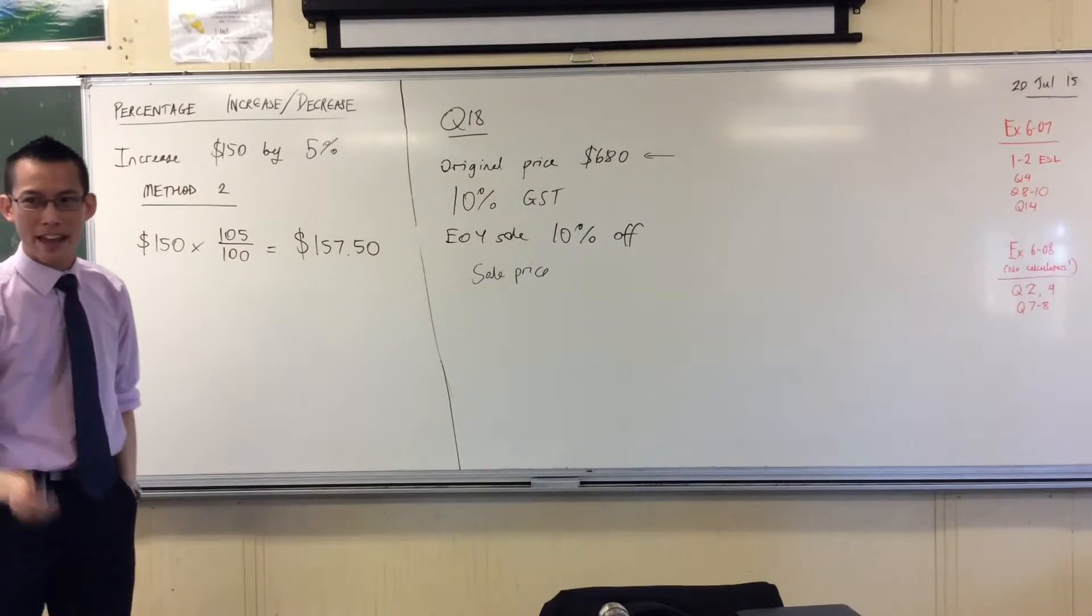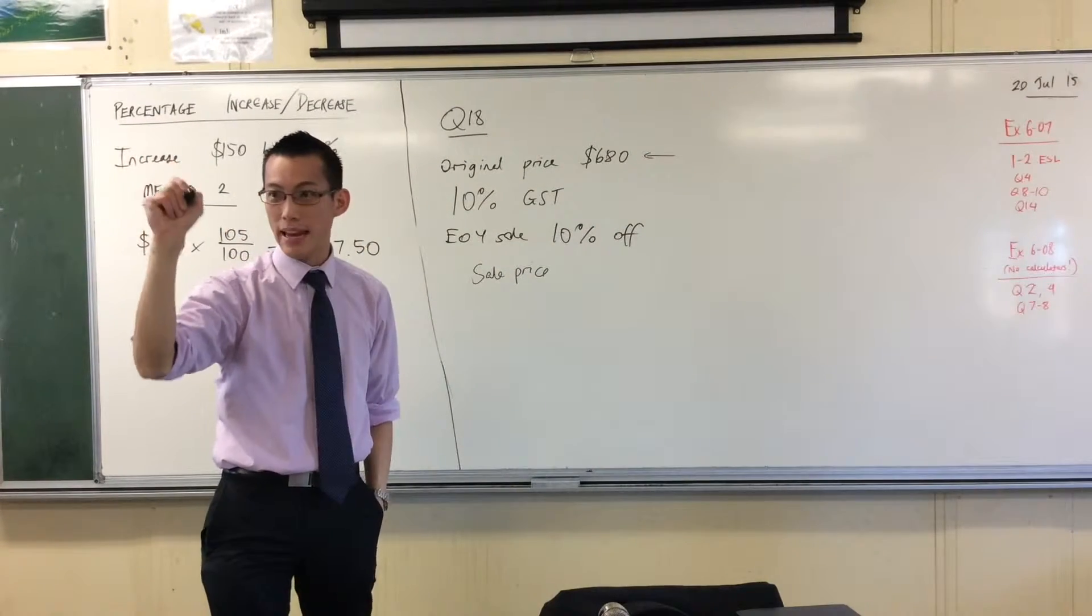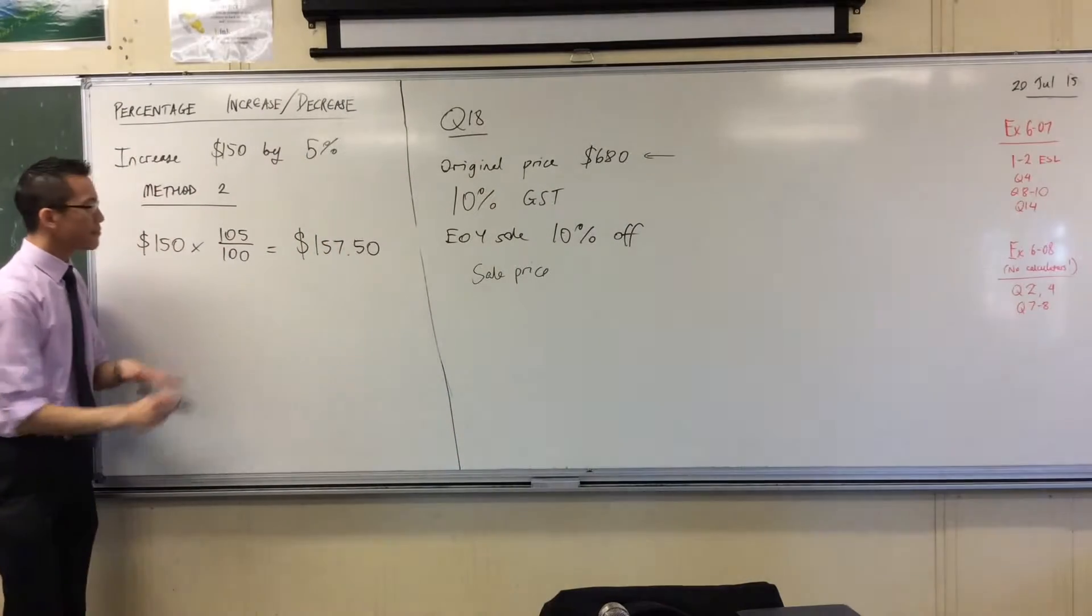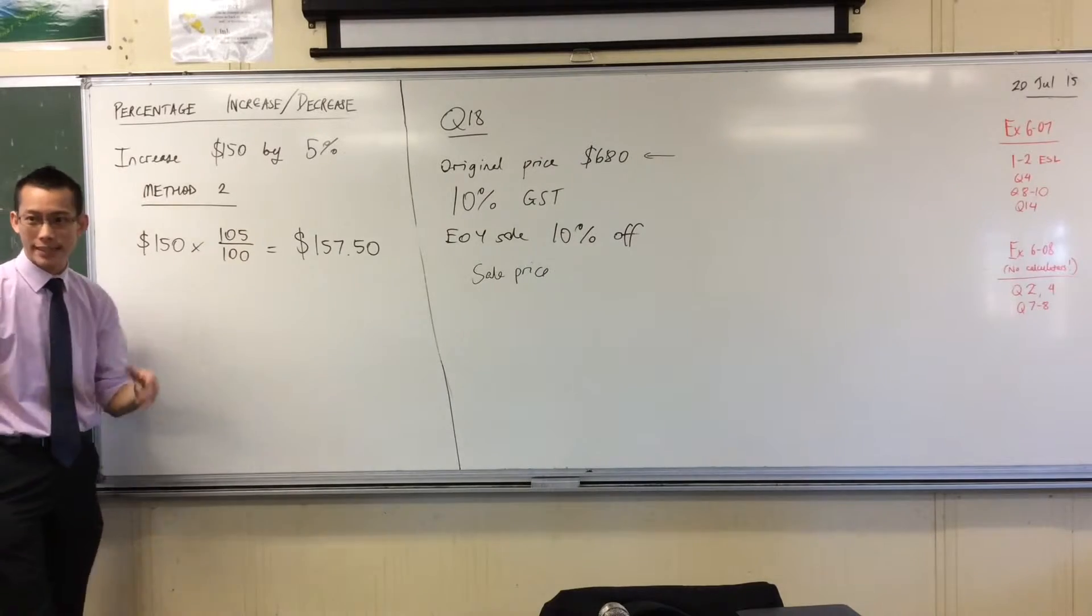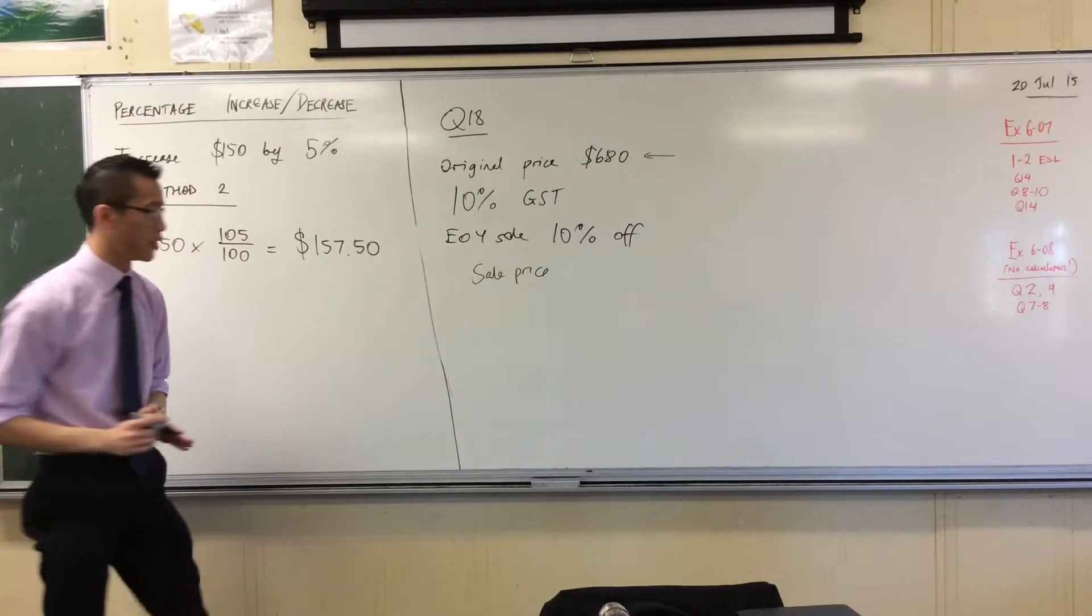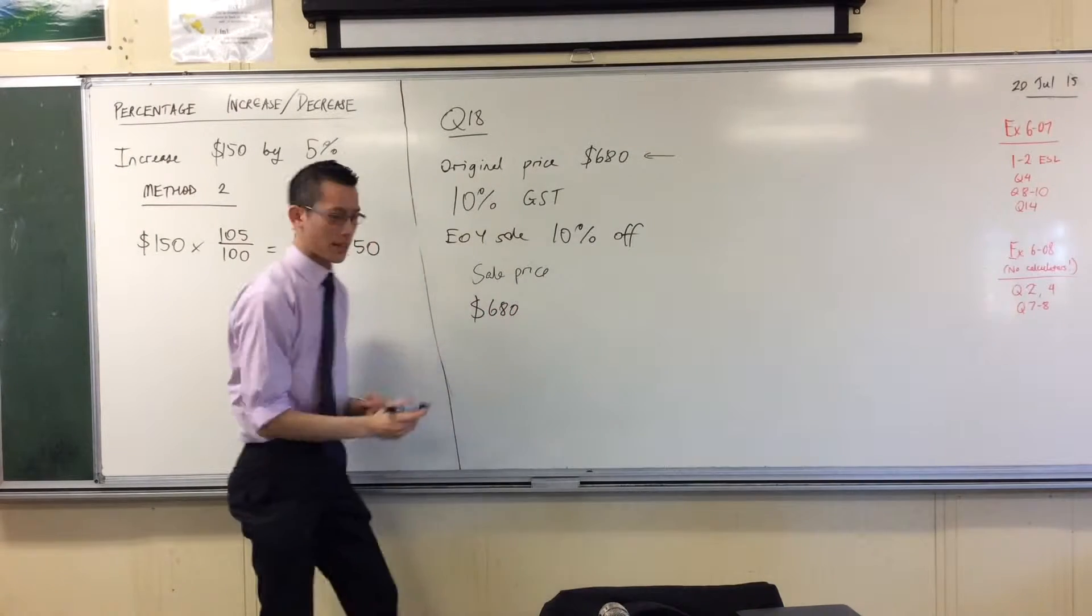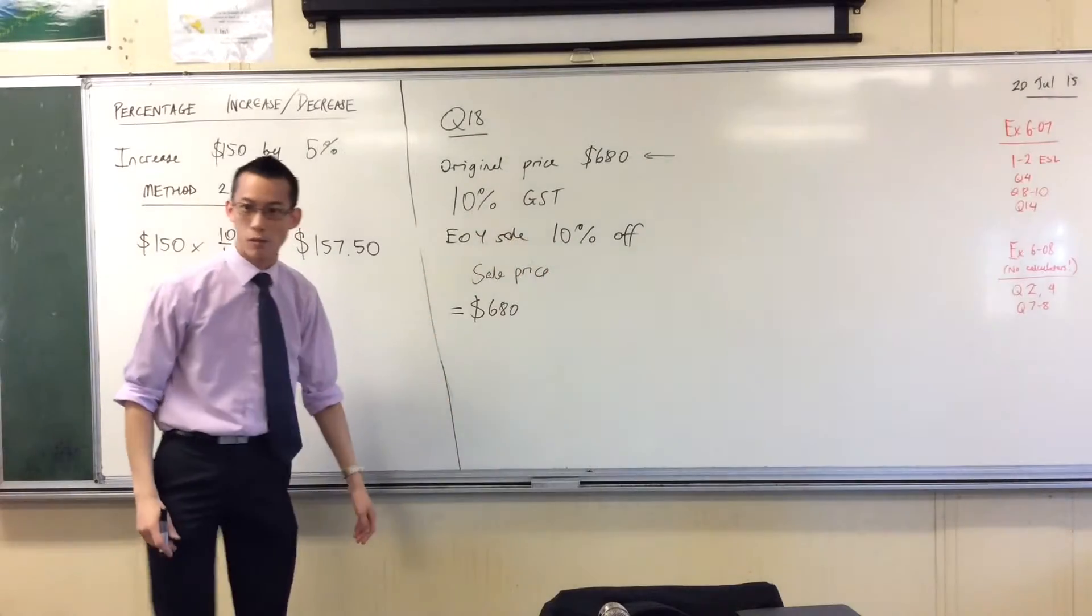Here comes the power of mathematics to actually solve this question. Pen in hand, pen in hand, and follow with me. So here's where method two, this other way, it really shines. So watch with me. I start with 680. I start with 680. This is me trying to work out the sale price, the final sale price.